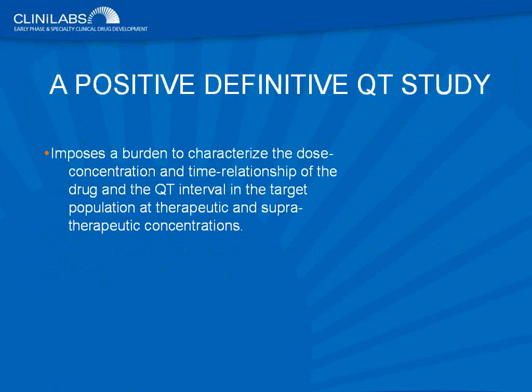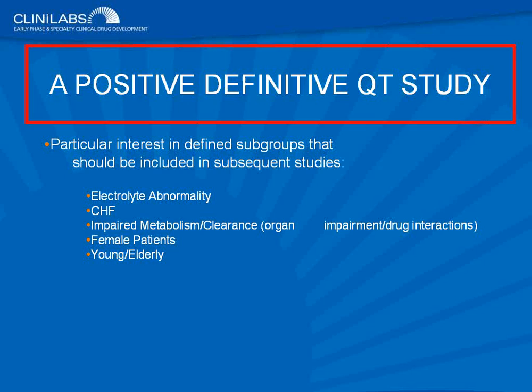The flip side is a positive definitive QT study. Here the burden shifts to the sponsor to characterize the dose-concentration and time relationship under which one might expect to see QT interval prolongation in the target population at therapeutic doses and concentrations. Is there enough of a window in which patients would not reach exposures that place them at risk? What is the likelihood of obtaining high exposures in a freestanding population? And importantly, are you targeting patients who have known cardiovascular disease, since the likelihood of developing ventricular proarrhythmia is grossly increased in individuals with cardiovascular disease?